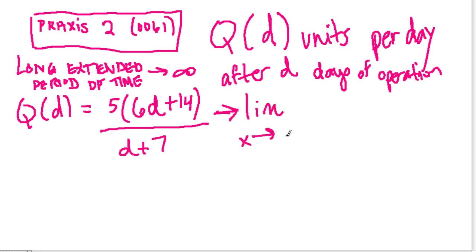So as D approaches infinity for this function, 5 times 6D plus 14 over D plus 7, what do we get? And I guess I should make this as D approaches infinity.